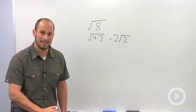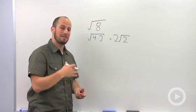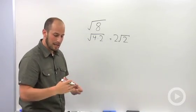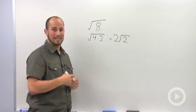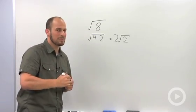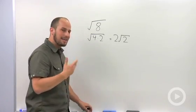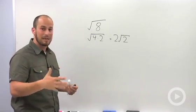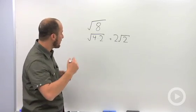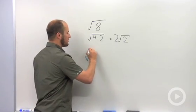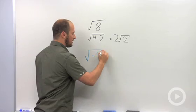Where imaginary numbers come in is when we are taking the square root of a negative number. And up until now, what we've said is you can't take the square root of a negative number, which was sort of a lie. I apologize. But in order to do it, we have to use these imaginary numbers. So, let's take a look at the square root of negative 9.